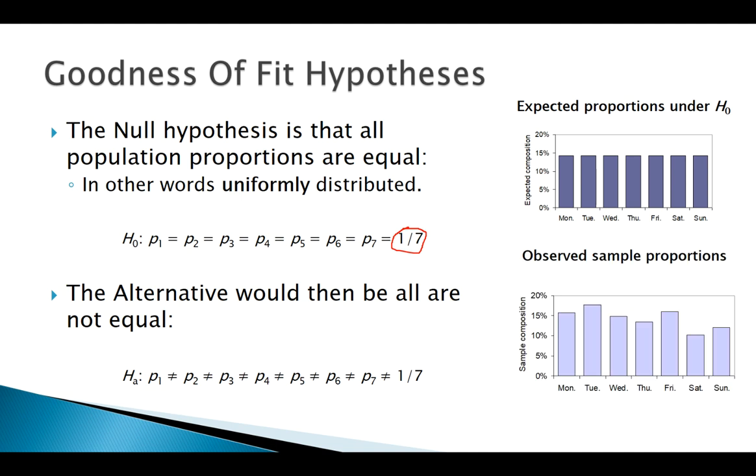Here's the actual observed data. Just looking at these graphs, we see that our graph definitely doesn't look perfectly uniformly distributed. Upon visual examination, we see Saturday's a little lower than what we expected and Tuesday's higher than what we expected.